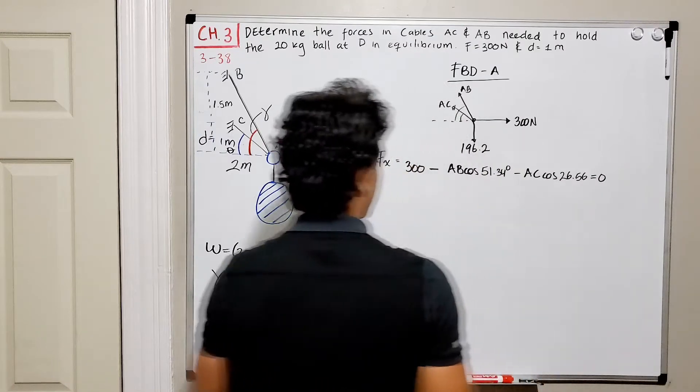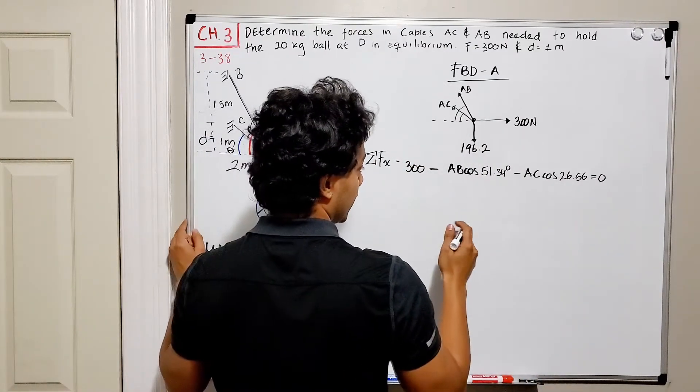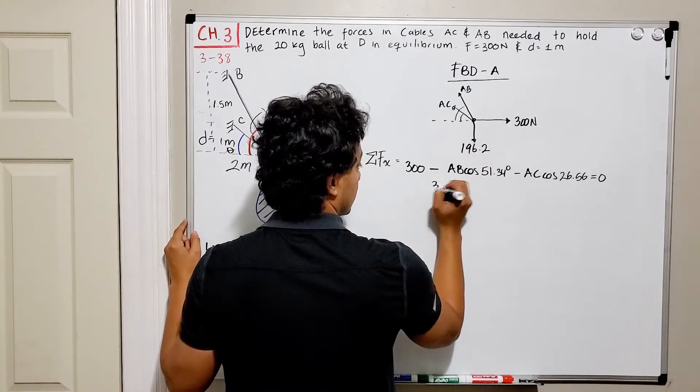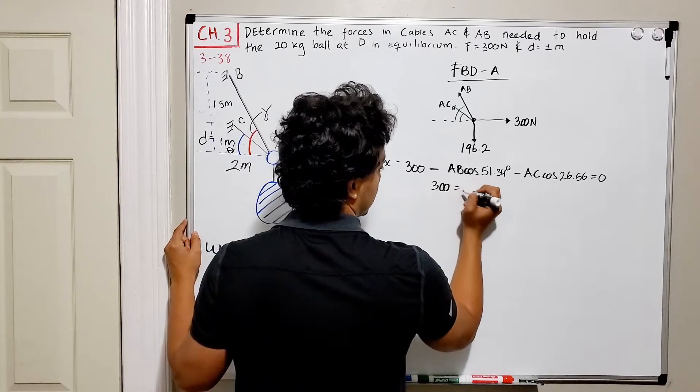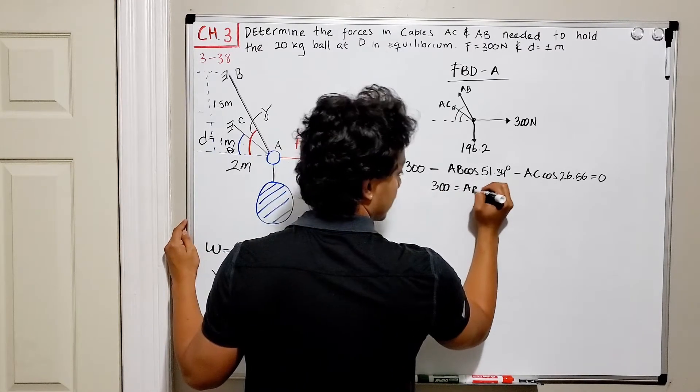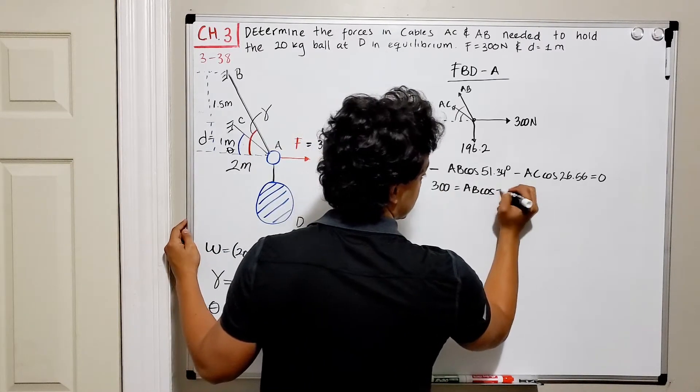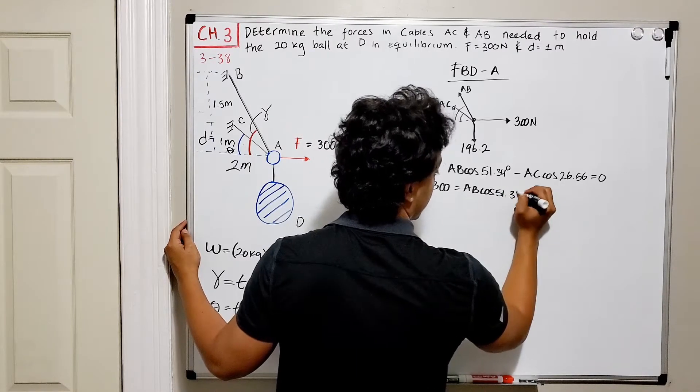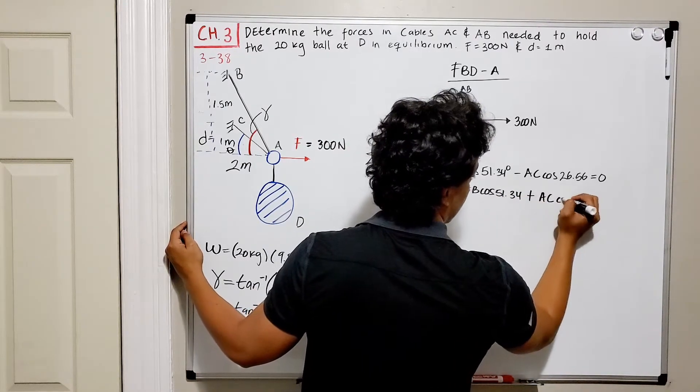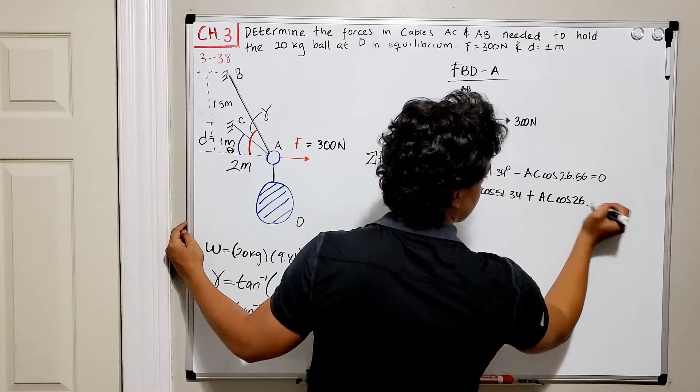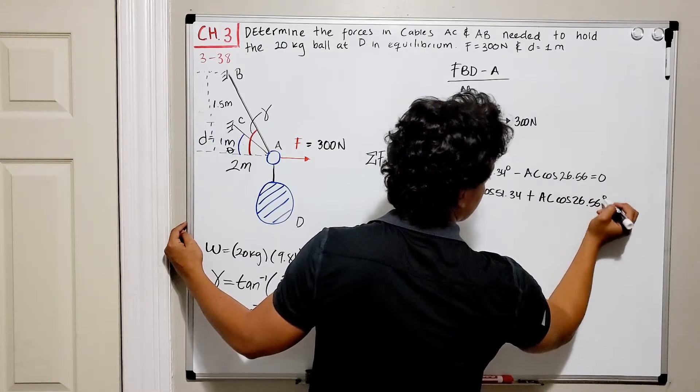We can organize this equation. We got the 300 equal to the addition of the two forces.